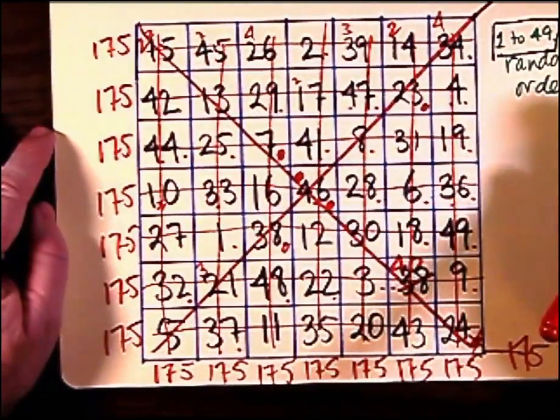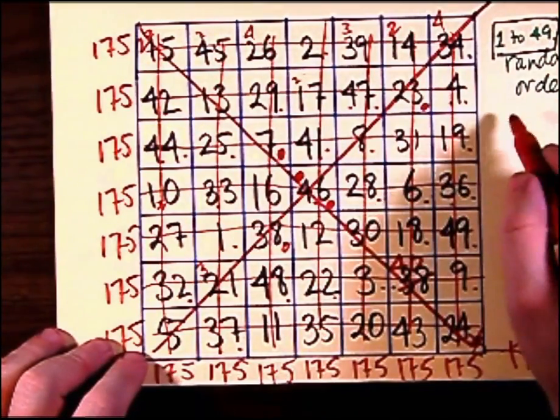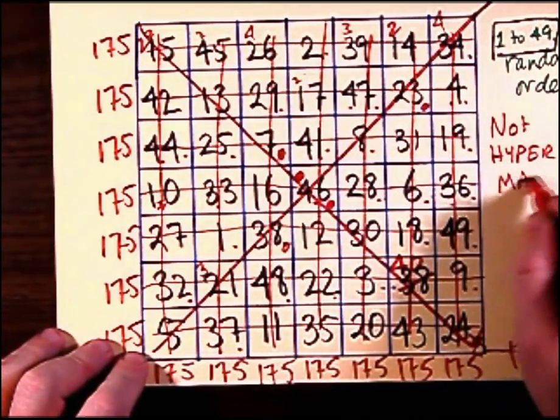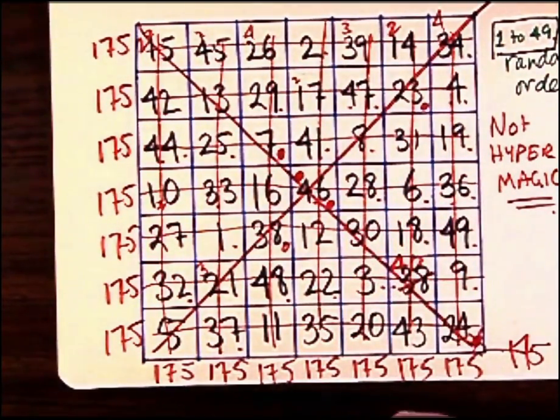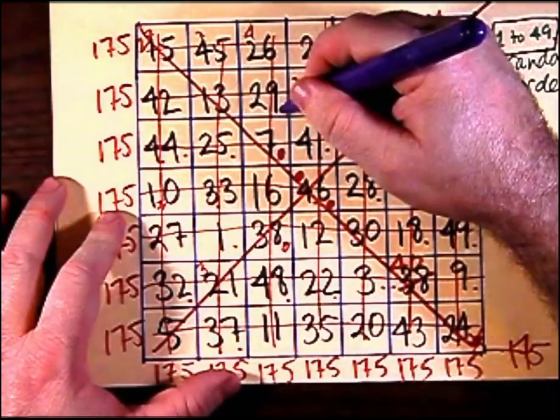But this one is not hyper magic, unfortunately. It doesn't share that same heritage as the five by five. And all magic squares beyond seven by seven are not hyper magic.